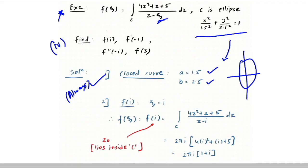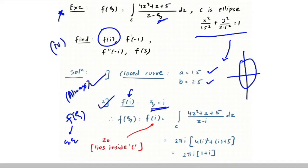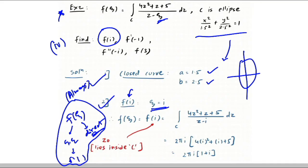For part (1), f(i): the singularity is ζ = i. There is no need to derive the generalized equation — you can substitute directly. Direct substitution works when you need f of a constant; you need the generalized equation when derivatives like f' are required.